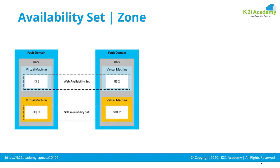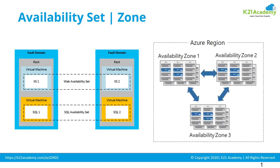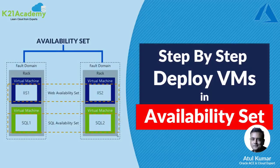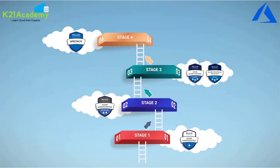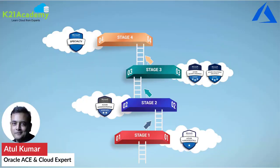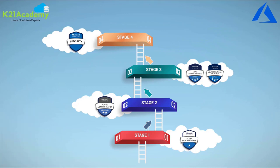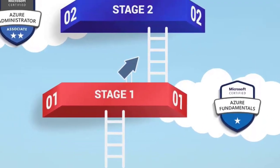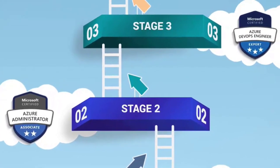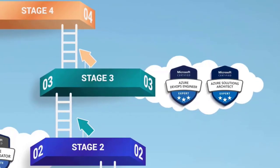How to configure two virtual machines across fault domains in an availability set for 99.95% uptime, or deploying two machines across availability zones for 99.99% uptime. We are going to look at a step-by-step procedure to deploy virtual machines in an availability set for high availability in this episode. Welcome to another episode of a weekly video series with Atul Kumar from K2N Academy, taking you from complete beginner at stage one, through Azure administrator at stage two, all the way to stage three expert level — DevOps or Azure Solutions Architect.